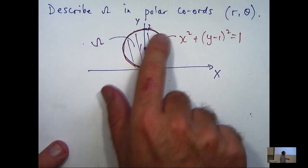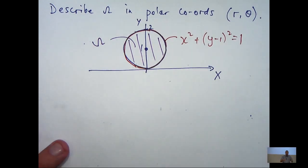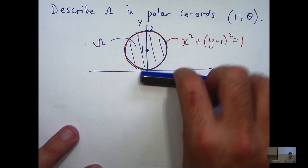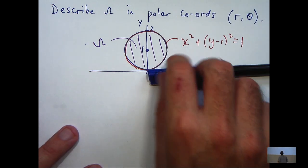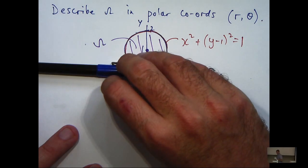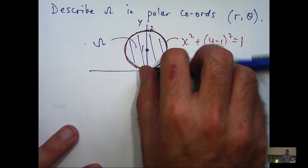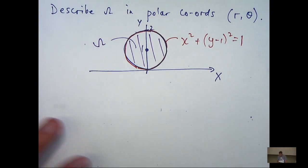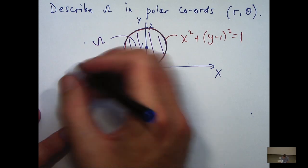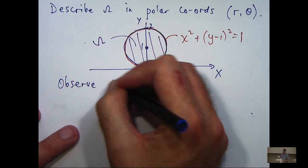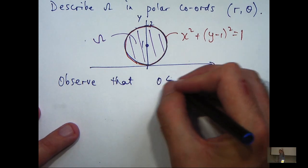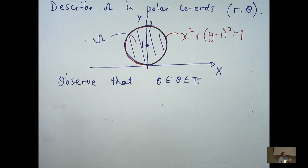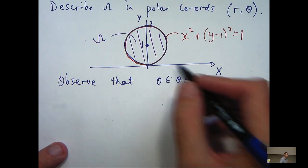So the challenge now, can we describe all these points in this disk using polar coordinates? Well, let's do the easy part first. Think of the angle. If I start along the positive ox axis and I do a half turn, then the region will be completely covered by that half turn.